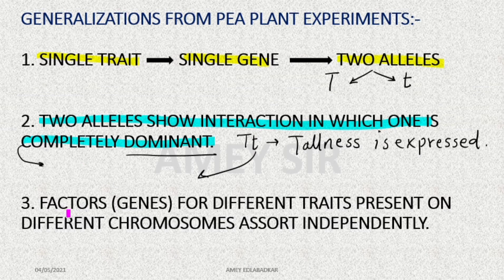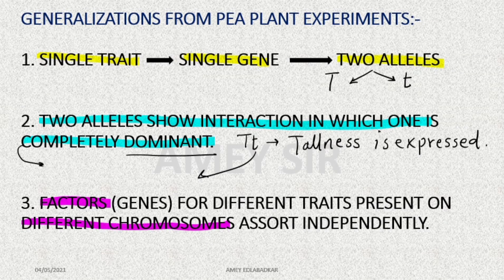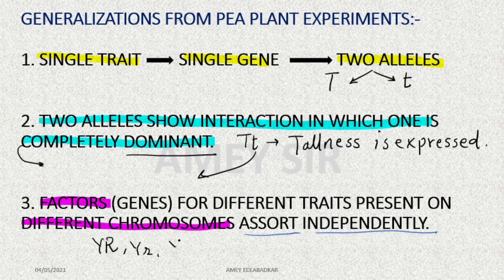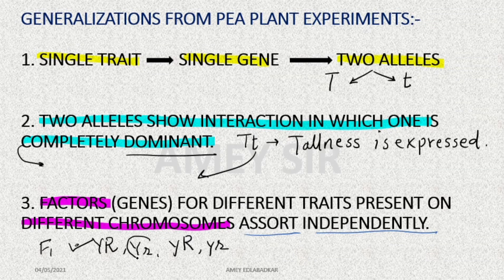Another important part of Mendel's generalizations was that factors or genes for different traits are present on different chromosomes, and they are distributed independently of each other. That is why we get four different types of gametes. If you remember the dihybrid cross and the recent video on test cross and back cross — these were the gametes produced by F1 heterozygote with formation of recombinants like yellow and wrinkled, green and round. These are Mendel's generalizations.